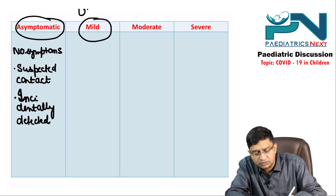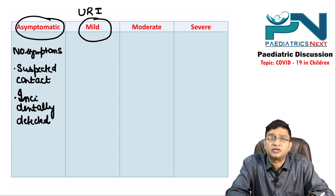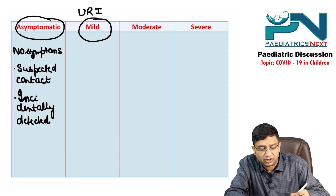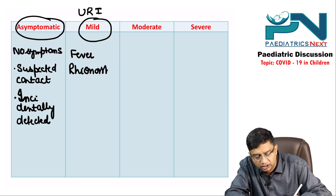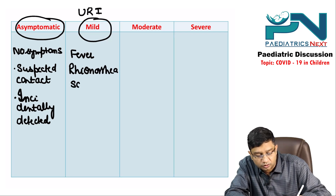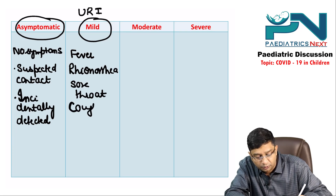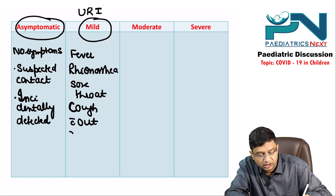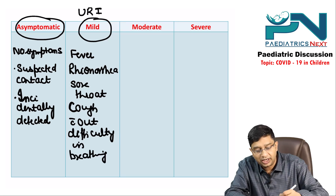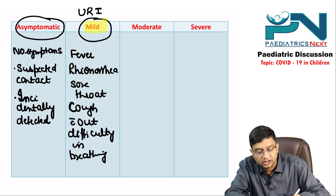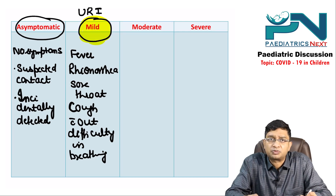In a mild case, the easiest way to remember is that the symptoms are those of upper respiratory infection. There can be fever, rhinorrhea, sore throat, and cough — but importantly, without difficulty in breathing. The symptoms in mild COVID in children are equivalent to upper respiratory infection.